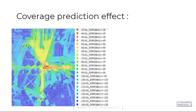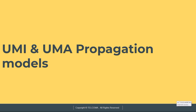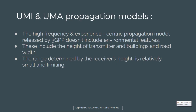Next is coverage prediction using UMI and UMA propagation models. The high frequency and experience-centric propagation model released by 3GPP does not include environmental features such as the height of transmitters and buildings, roads built, nor does it consider signal losses caused by trees, oxygen attenuation, rain attenuation, or other factors. The range determined by receiver height is very small and limiting. Important aspects such as the height coefficient of the receiver and transmitter, location features of the receiver, and outdoor to indoor penetration losses are areas of concern.